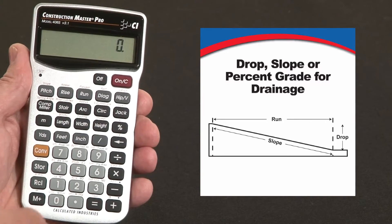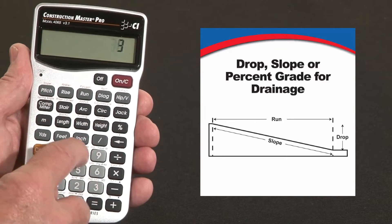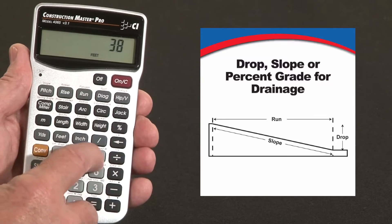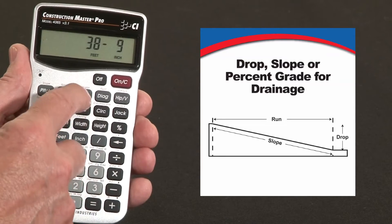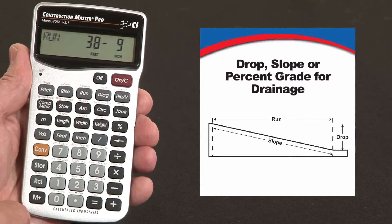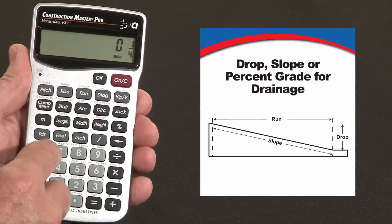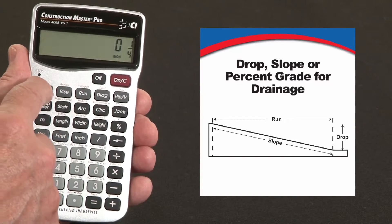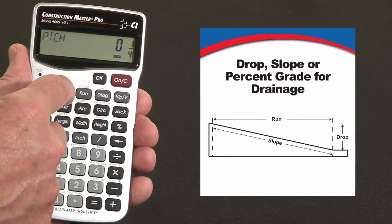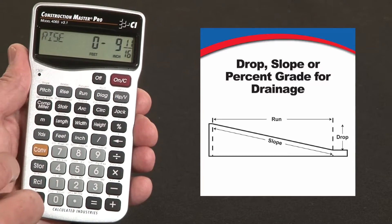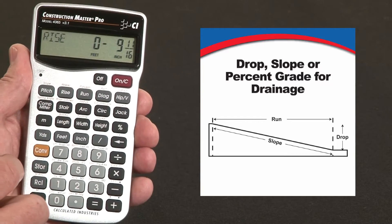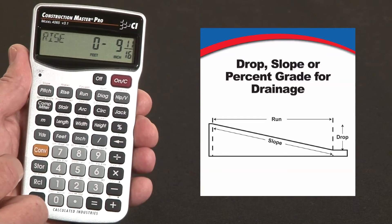Say we've got a total run of a driveway of 38 feet 9 inches — we'll call that our run. And we want it to fall or drop at a quarter inch per foot; call that our pitch. What will be the vertical change at the far end? It'll be 9 and 11/16 inches lower. Well, maybe that's a problem — you don't want to dig that deep, or there's an obstruction or something.